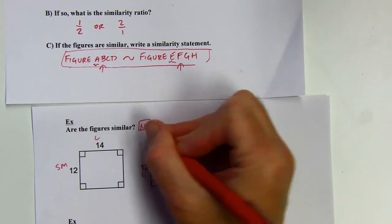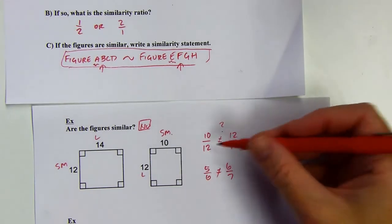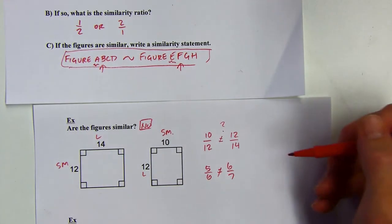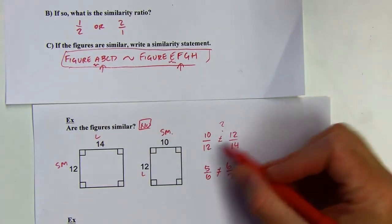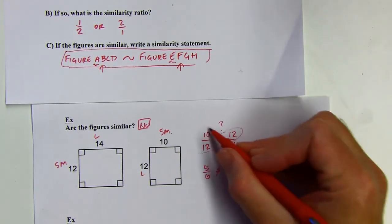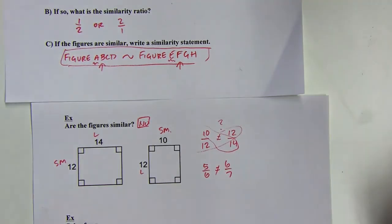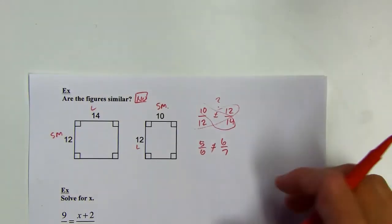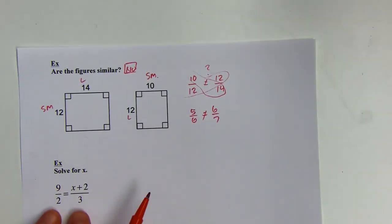After reducing both fractions, I can see they're not equal — so the answer is no, they're not similar because the sides aren't in proportion. You could also look at the decimal equivalents of these fractions, or you could cross multiply: if the fractions were equal, the cross products would be equal, but here you get 140 and 144, which confirms the fractions aren't equivalent.